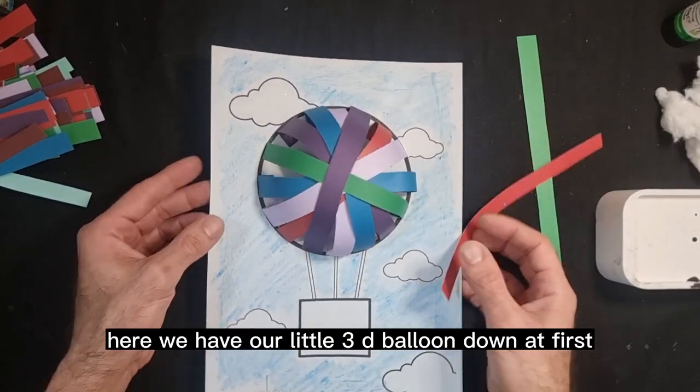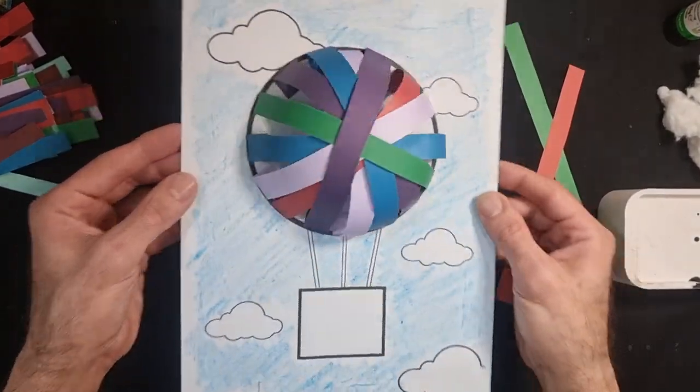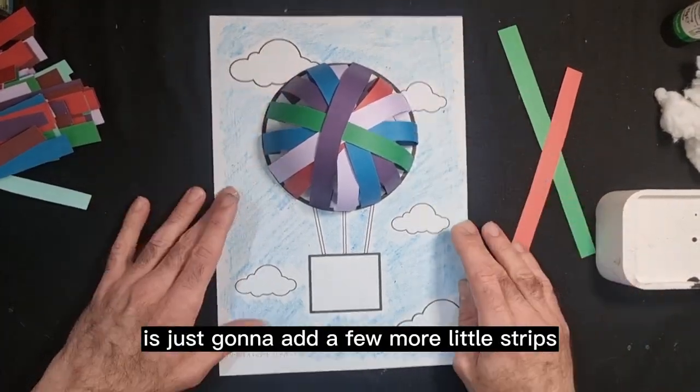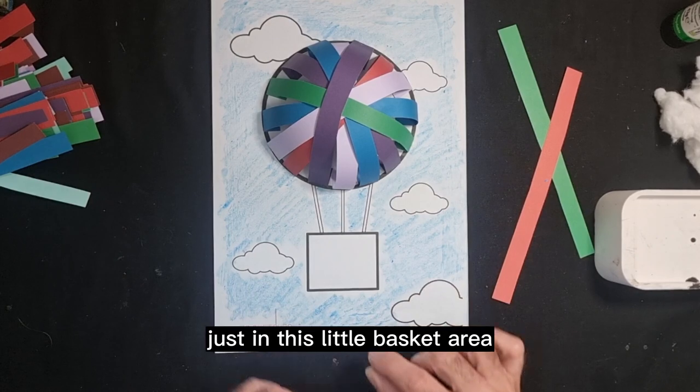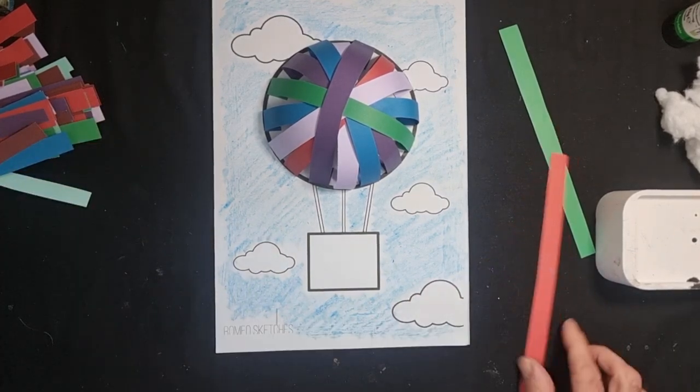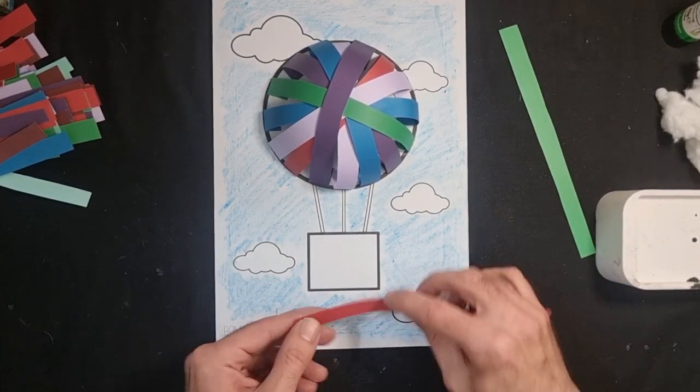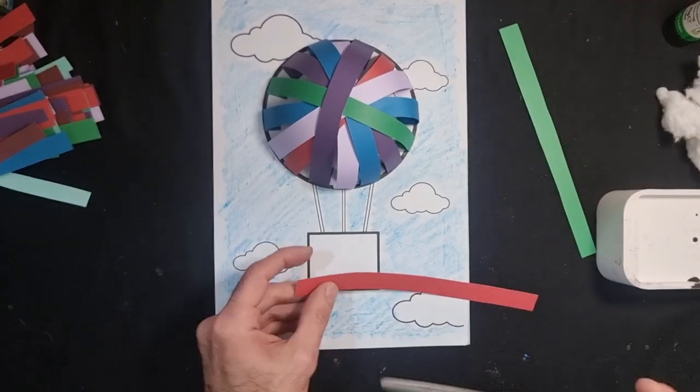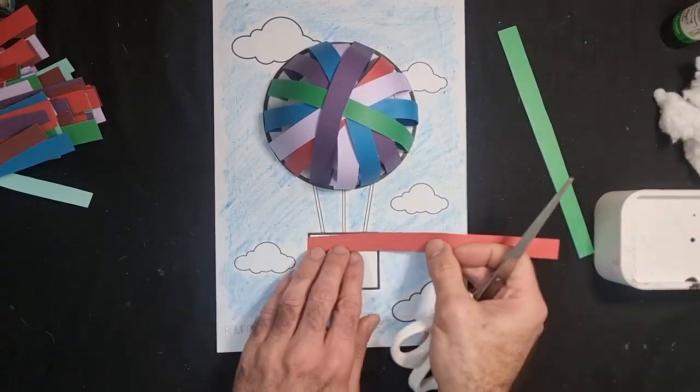So here we have our little 3D balloon done at first, looking very cool. Now what we're going to do is just going to add a few more little strips just in this little basket area. So you need a pair of scissors just to cut that length.